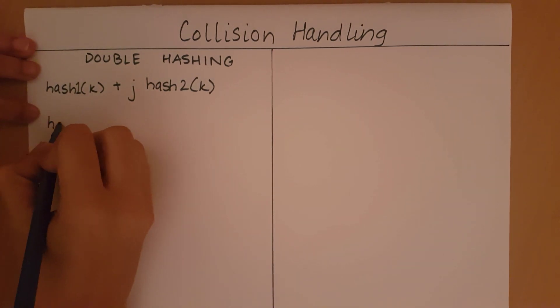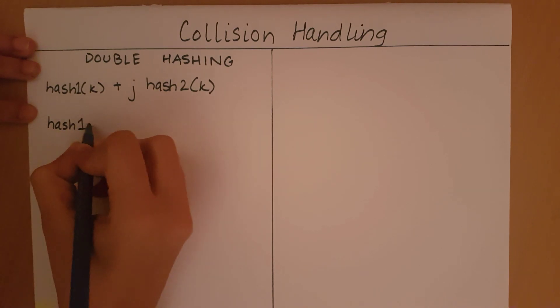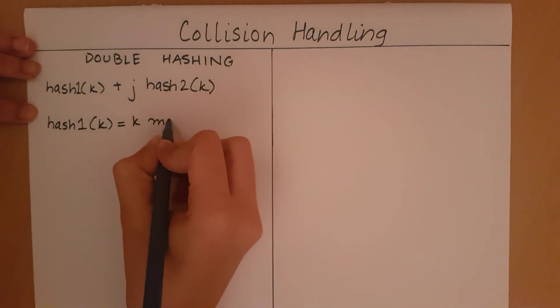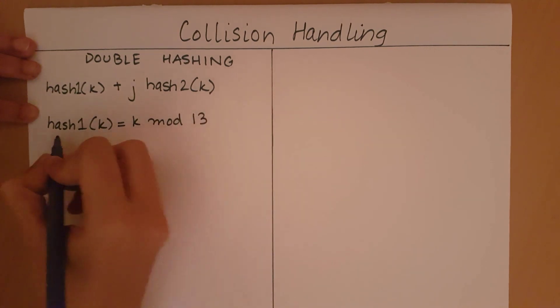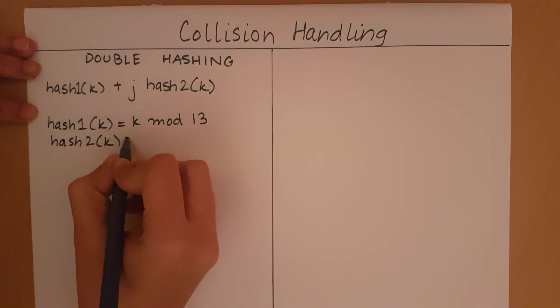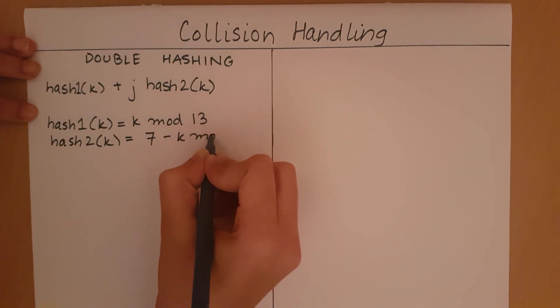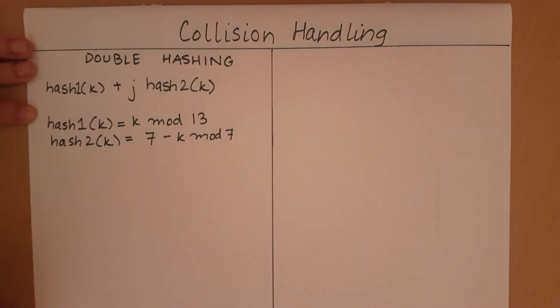Let's say that hash1(k) equals k mod 13. Let's say that hash2(k) equals 7 minus k mod 7. Okay, we have the two hash functions.